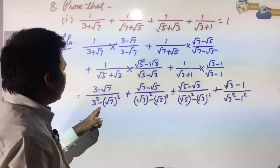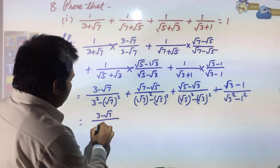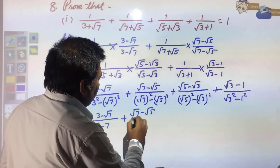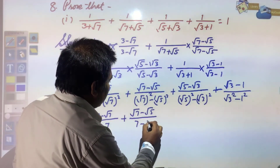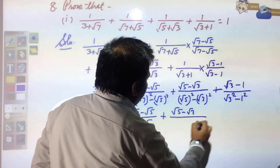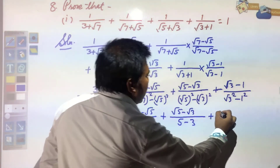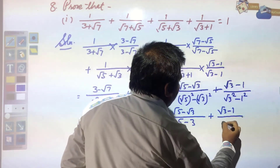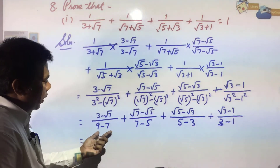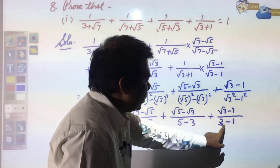Simplifying each term using a² - b²: (3 - √7)/(9 - 7), then (√7 - √5)/(7 - 5), then (√5 - √3)/(5 - 3), then (√3 - 1)/(3 - 1). In every denominator: 9 - 7 = 2, 7 - 5 = 2, 5 - 3 = 2, and 3 - 1 = 2.